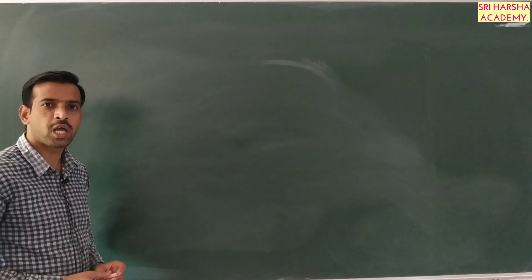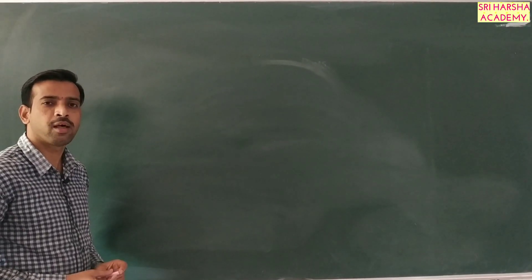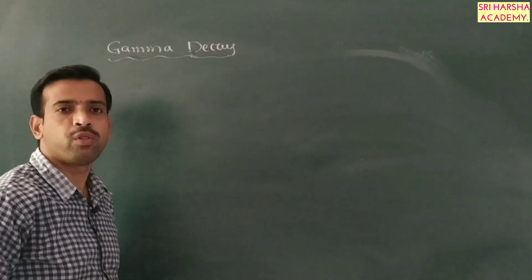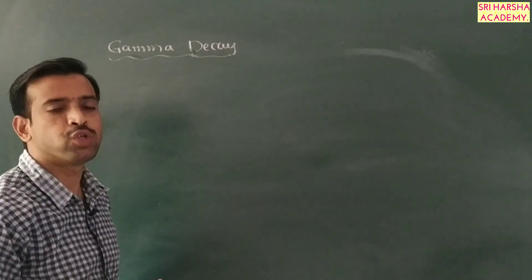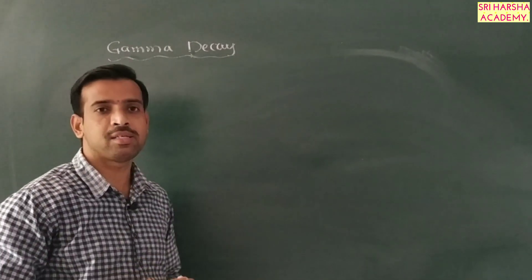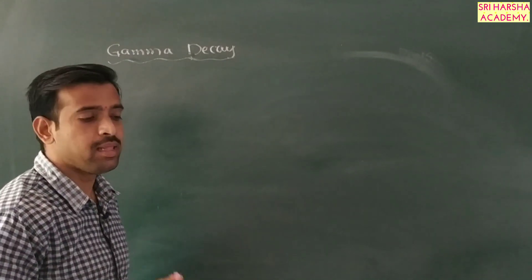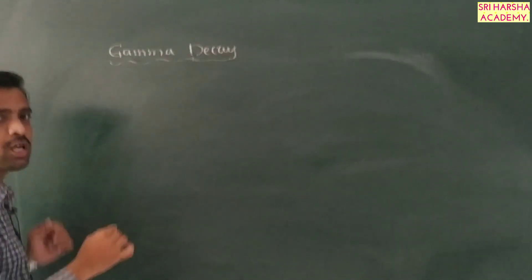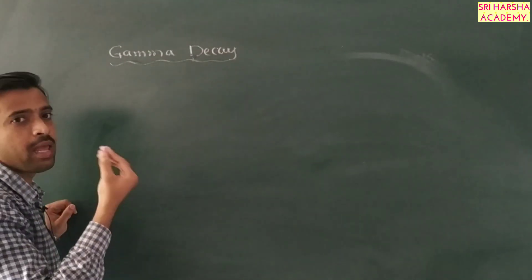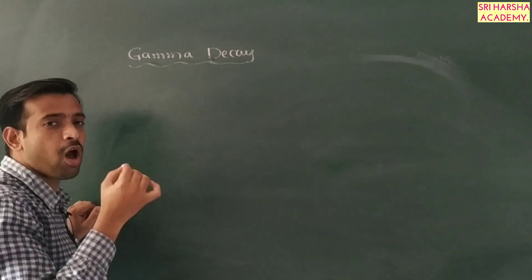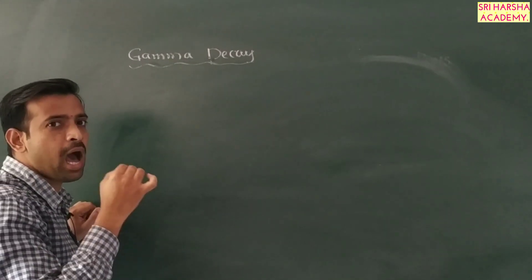Welcome students. Today I am explaining the topic of gamma decay. Gamma decay is when gamma rays are emitted from a radioactive element. Gamma rays have high energies compared to X-rays. Gamma particles do not pre-exist inside the nucleus — we already know this, especially from what we learned in alpha decay.